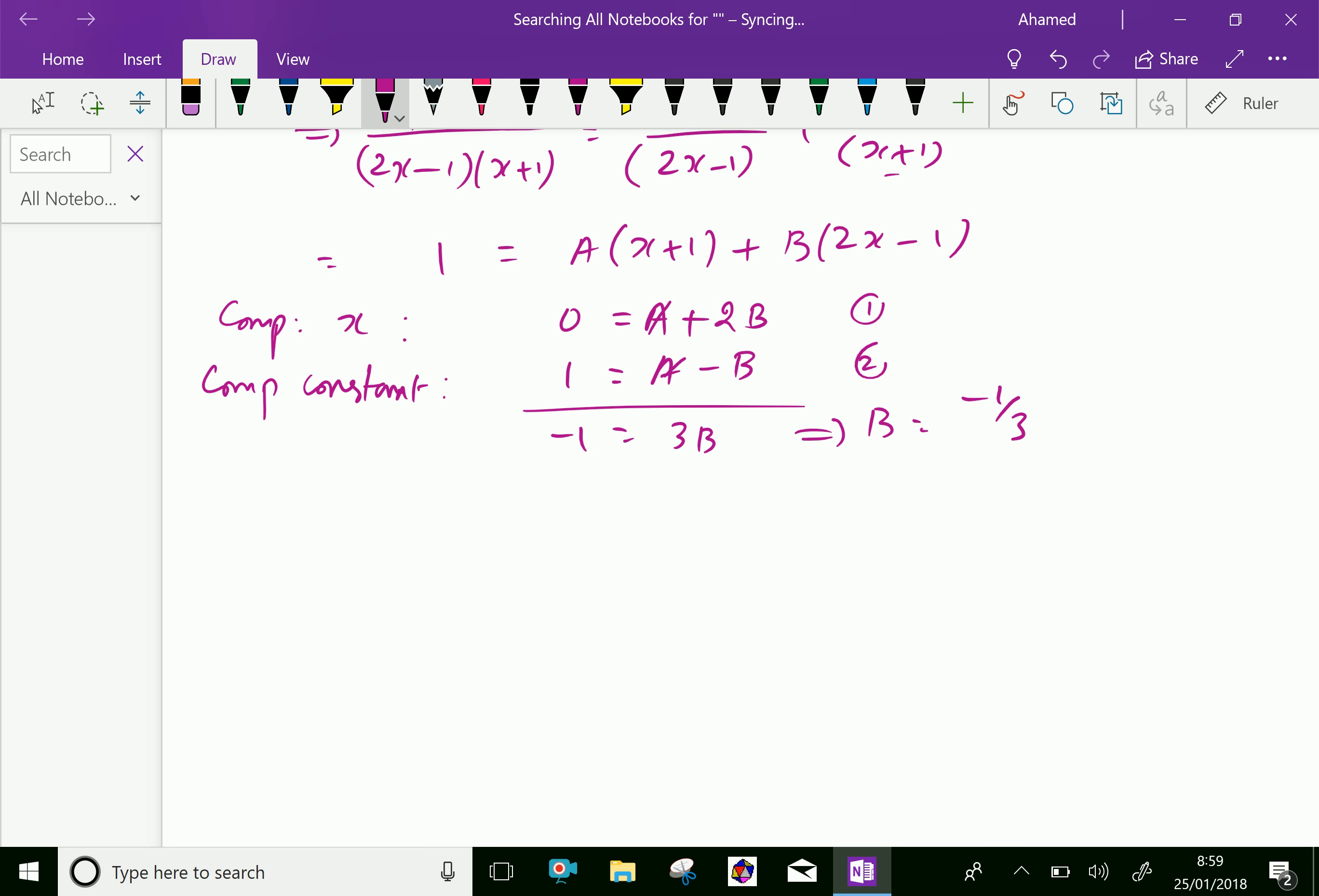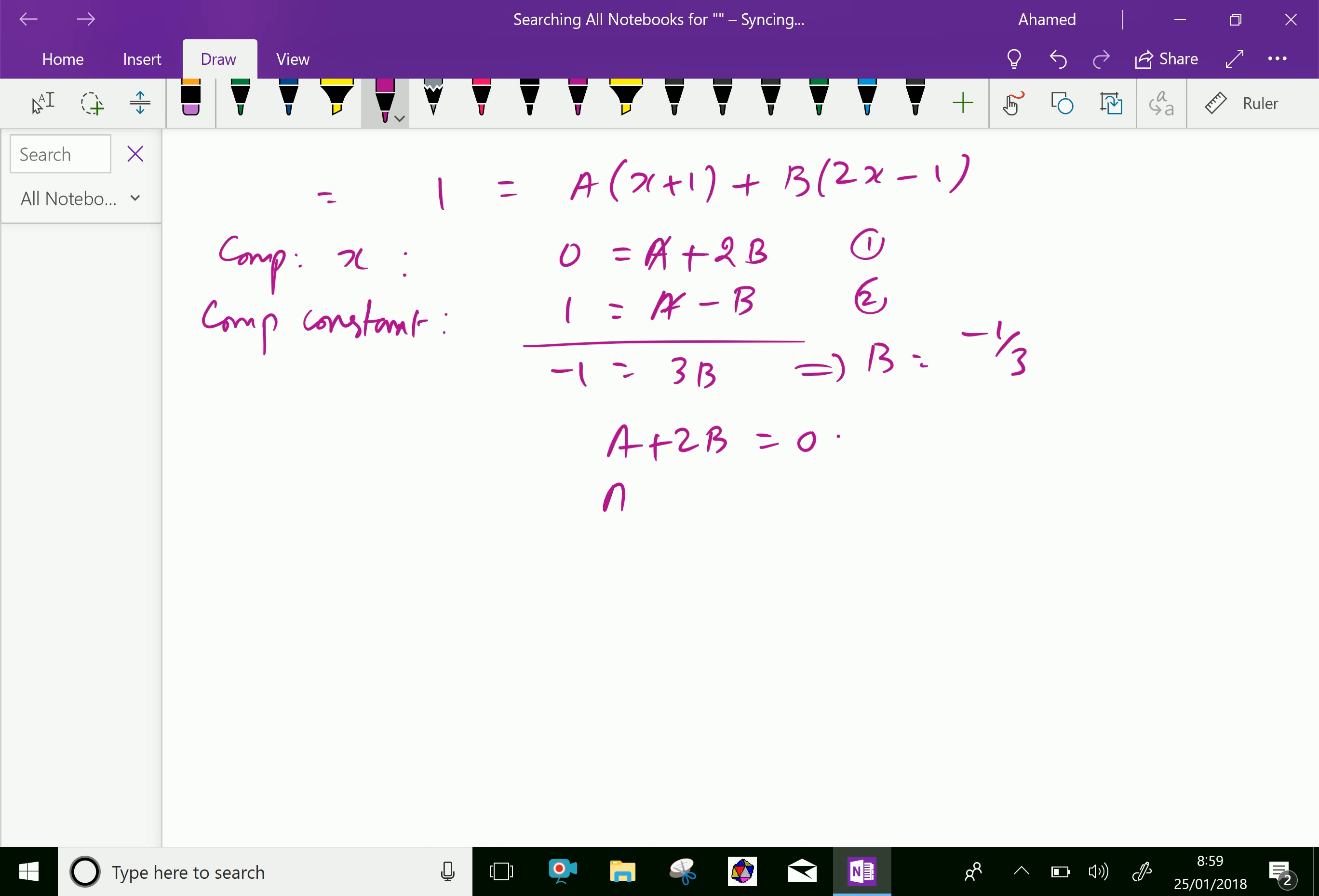Now, let us substitute in the first equation: a plus 2b equals 0, which gives a minus 2 by 3, because we substitute b as minus 1 by 3. Therefore, which gives a equal 2 by 3.